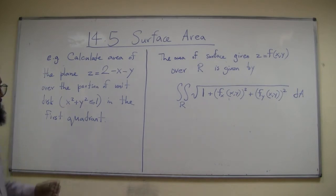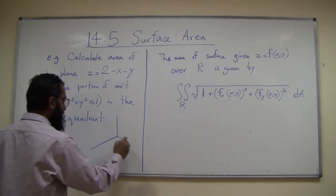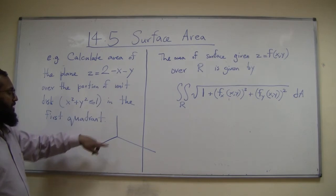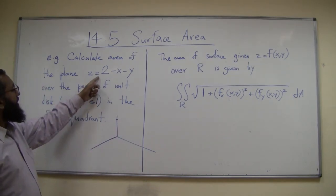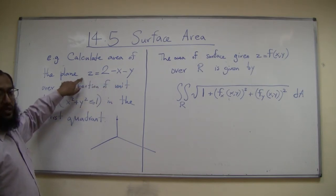Let's try to first visualize this thing. What is going on here? So you have this thing z equals 2 minus x minus y. How do we know this is going to be a plane? Because you can write it as x + y + z equal to 2.